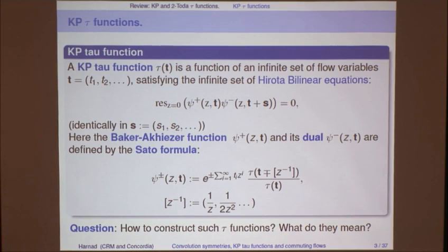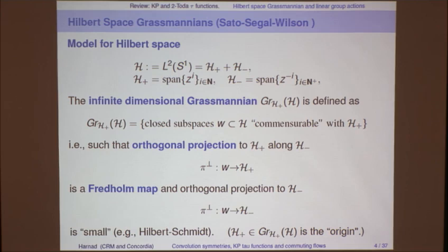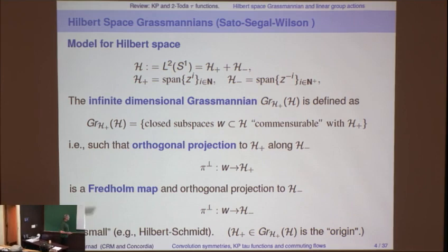But the question is: how do you construct these things? The usual applications are to generate solutions to the KP hierarchy, but in the applications I'm going to be talking about, they appear as generating functions for random processes, as random matrix integrals, as topological generating functions. So they really do have a very wide range of applications.